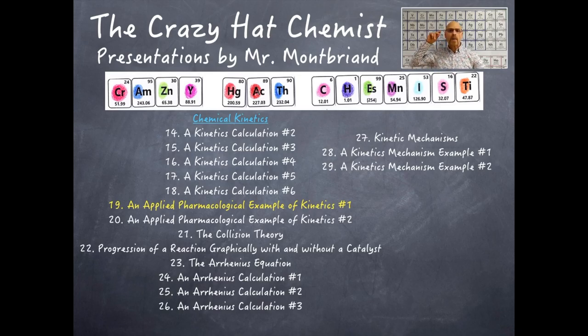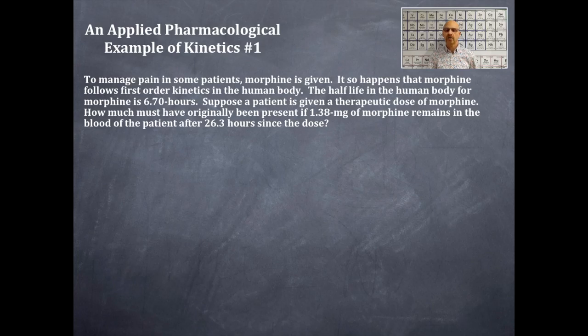To manage pain in some patients, morphine is given. It so happens that morphine follows first-order kinetics in the human body. The half-life in the human body for morphine is 6.70 hours. Suppose a patient is given a therapeutic dose of morphine — how much must have originally been present if 1.38 mg of morphine remains in the blood after 26.3 hours since the initial dose?